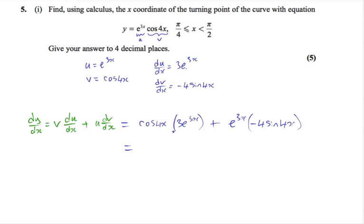In both terms, we can see that we have an e to the 3x, so we can take this out as a factor. And inside the bracket, we will have 3 cos 4x minus 4 sine 4x.